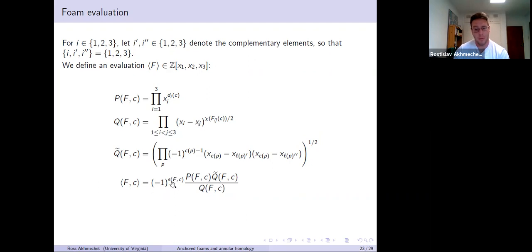Finally, you set the evaluation F bracket FC to be P times Q tilde divided by Q. There's this extra sign out here, negative one to the S of FC, which is very important but a little tricky. And the final evaluation, the total one, is just the sum over all the colorings, sum of the evaluations over the set. That's the evaluation.